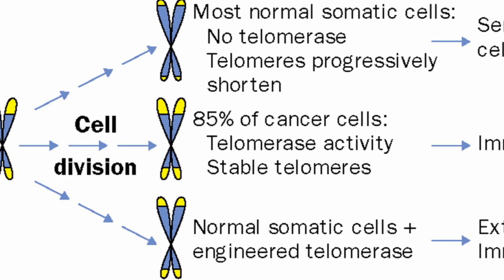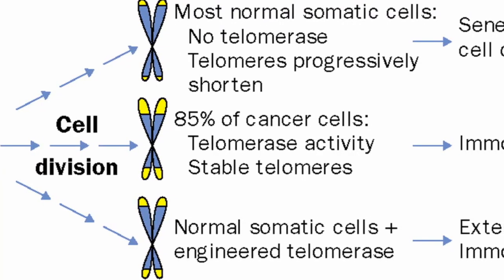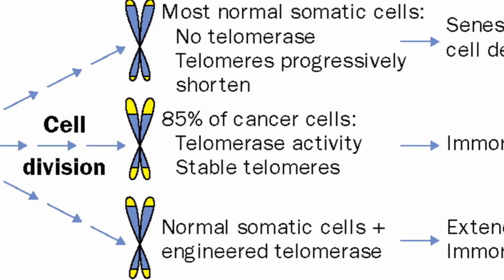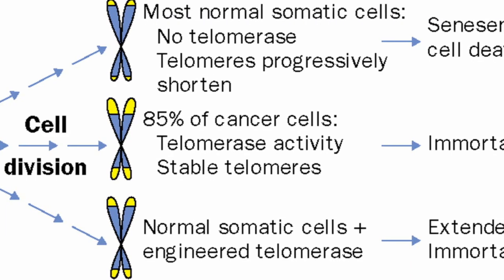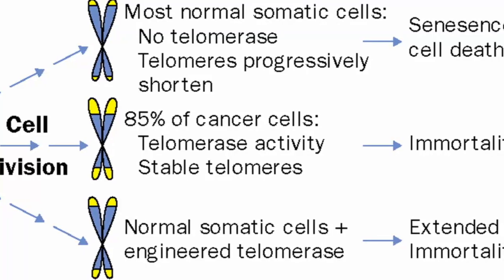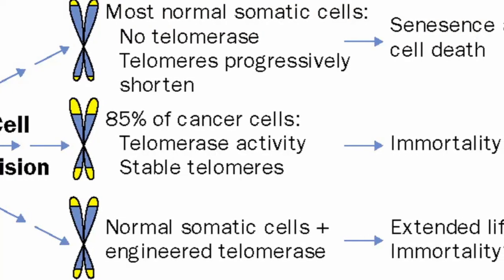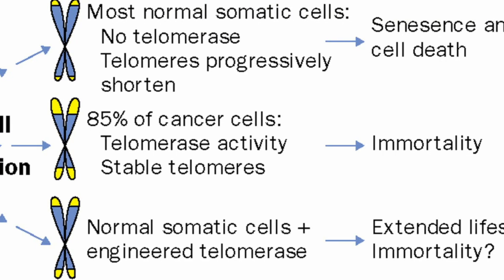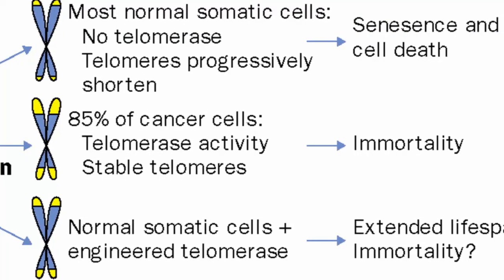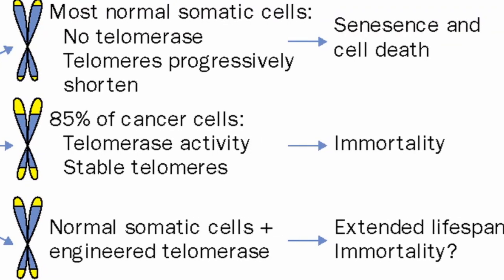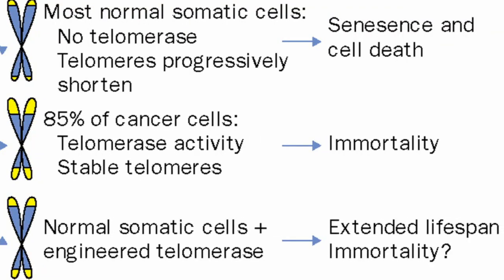Telomeres have to be kept at an optimum length. If they become too short, cell cycle arrest occurs. If they are too long, the risk of cancer becomes too great. There are a few biotech companies currently researching telomerase as a form of gene therapy. However, it is a delicate balancing act — telomerase is absent in normal cells of the body but present in around 95% of all human cancers. There is certainly potential to use this enzyme in anti-aging therapies, but we have to be careful not to induce cancer — because if we're trying to achieve biological immortality, that would be the opposite effect of what we're looking for.